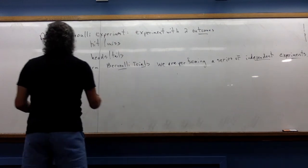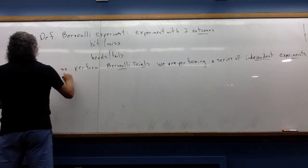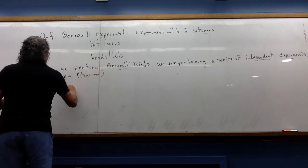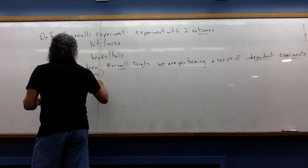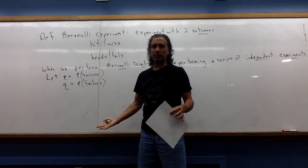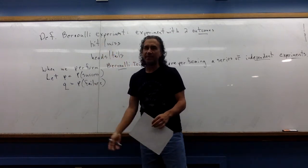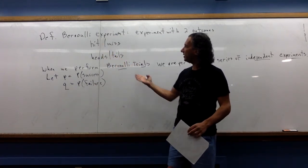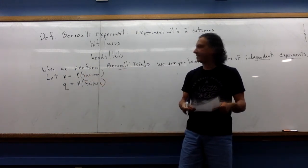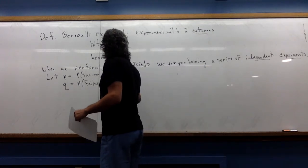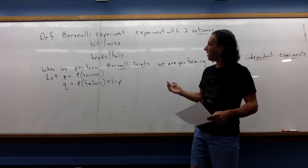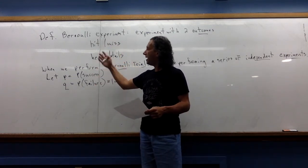Let p be the probability of success and q be the probability of failure. You can define success and failure pretty arbitrarily — maybe a success is hitting something, or maybe you're calling missing a success. But regardless of how you define it, we use lowercase p for the probability of success and q for the probability of failure. So q is just 1 minus p, since we have two mutually exclusive outcomes.